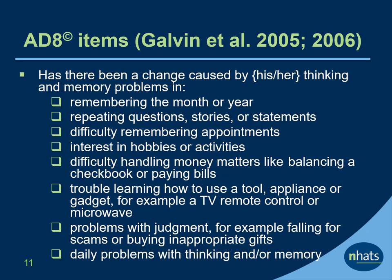Proxy respondents are also asked to complete a validated dementia screen developed by Galvin and colleagues called the AD-8. The AD-8 asks whether there has been a change caused by the respondent's thinking and memory problems in eight areas — for example, whether they had trouble remembering the month or year, repeating questions, stories, or statements, and difficulty remembering appointments. A score of two or more problems is highly predictive of dementia.